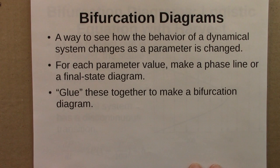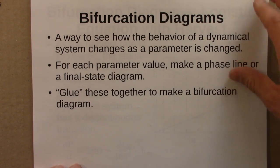They're built up, I think it's best to think of them as being built up one parameter value at a time. So for each parameter value, make a phase line if it's a differential equation, or a final state diagram for an iterated function. And you get a collection of these, and then you glue these together to make a bifurcation diagram.